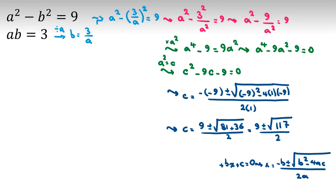So, we found c is what? Let's do something. 117 is multiple of 9. So, we can say 9 plus minus, if we take 9 outside square root, it will be 3 and square root of 13 over 2. So, c will be this.